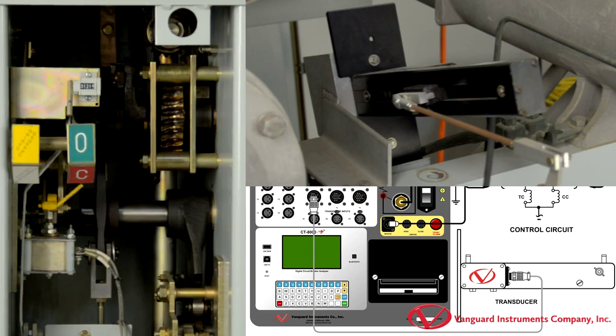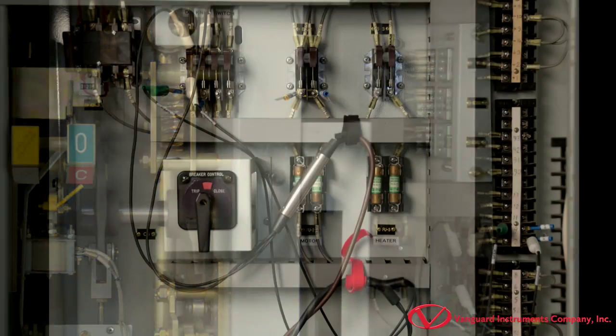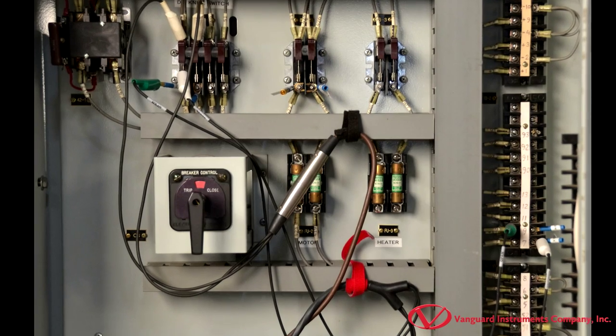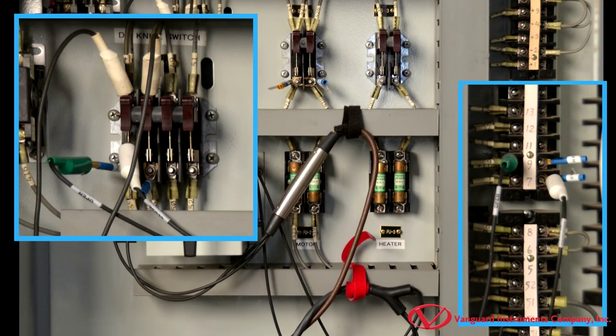Next, we will connect the digital transducer to the CT-8000 as shown here. Then, we will use the supplied initiate cable to connect to the breaker's control circuit.